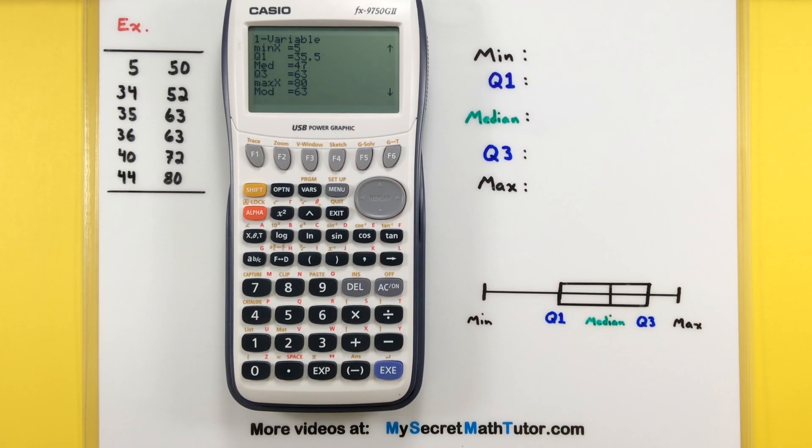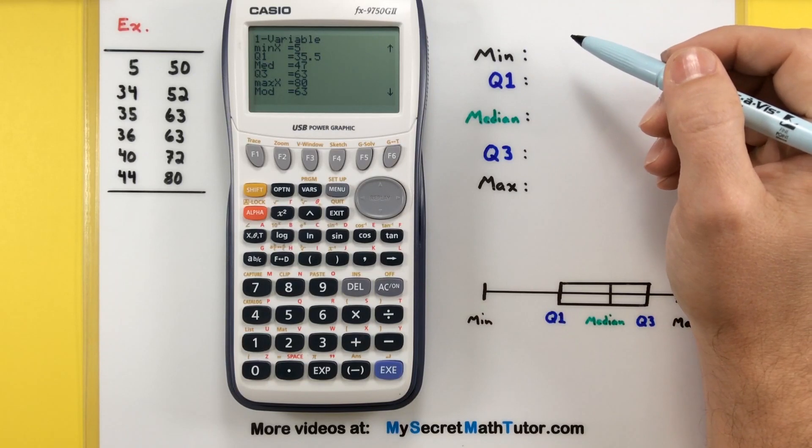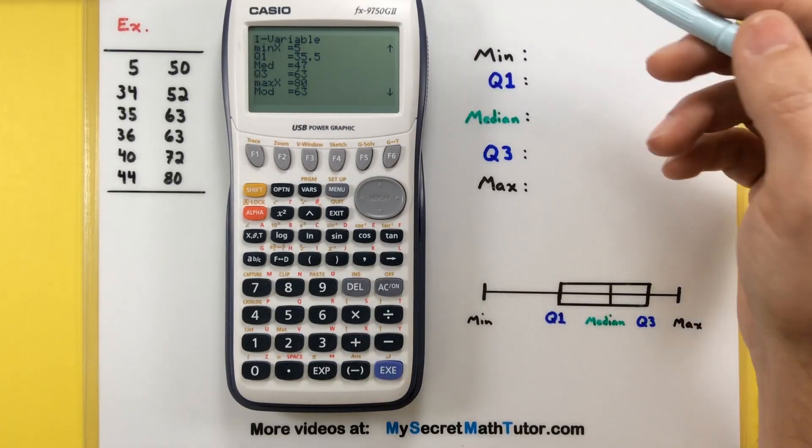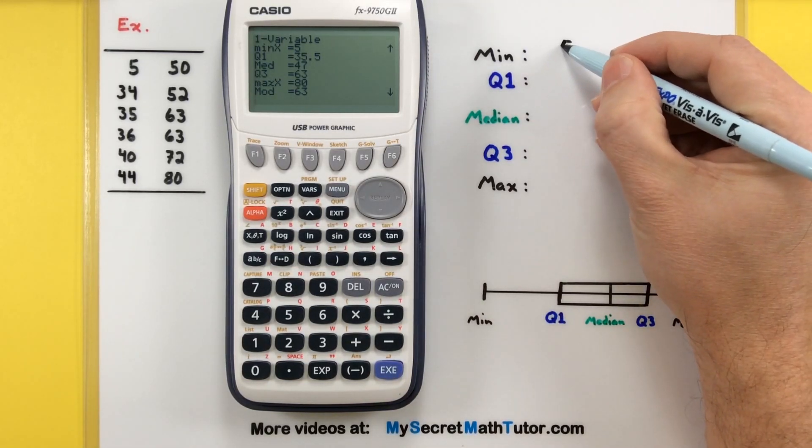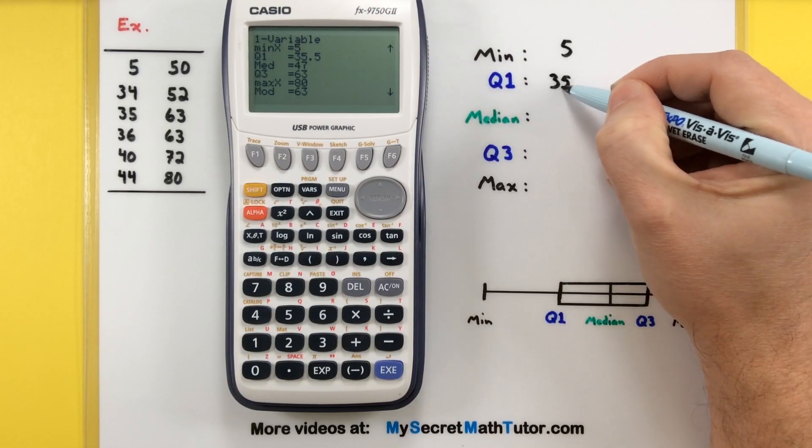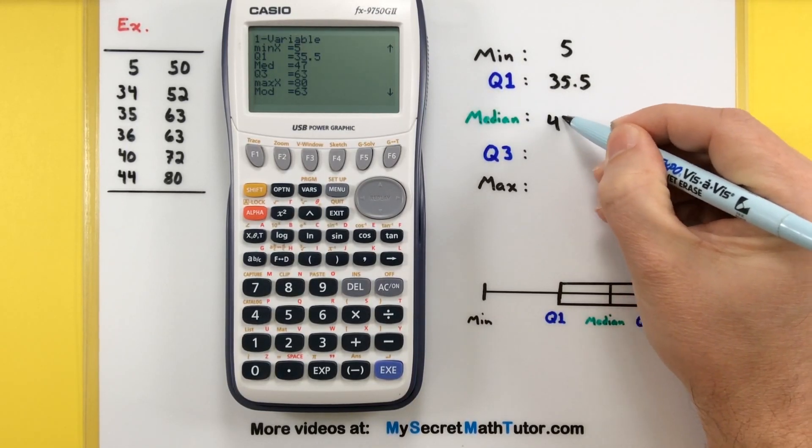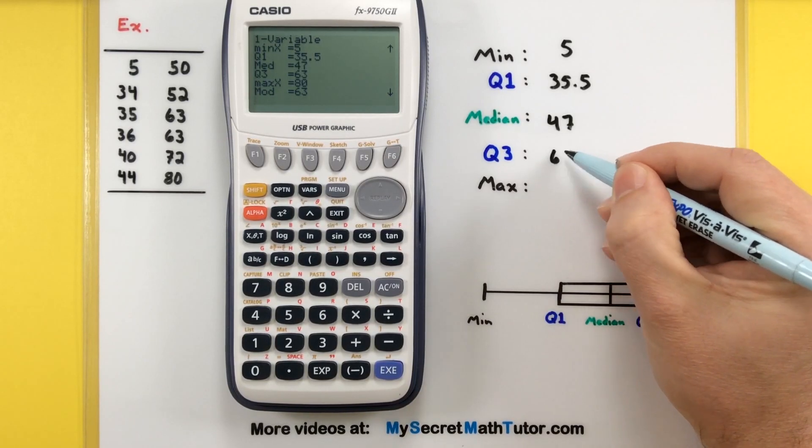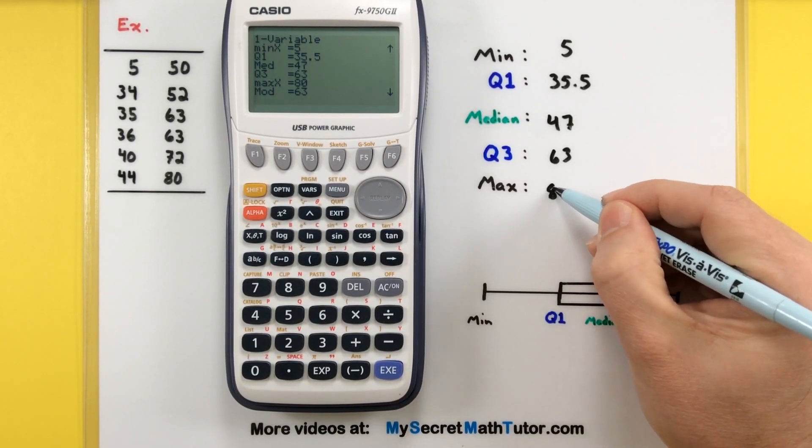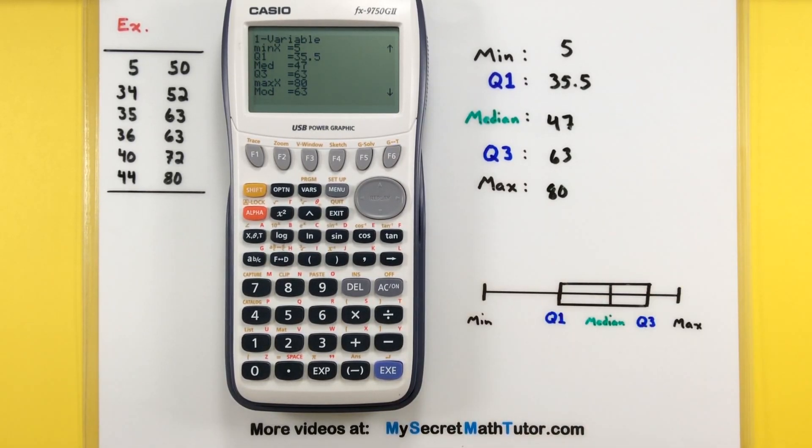And now we can see there's the min, the first quartile, the median, third quartile, and the maximum. It even has the mode in there. So let's just go ahead and write all this in. So there's all of that great information.